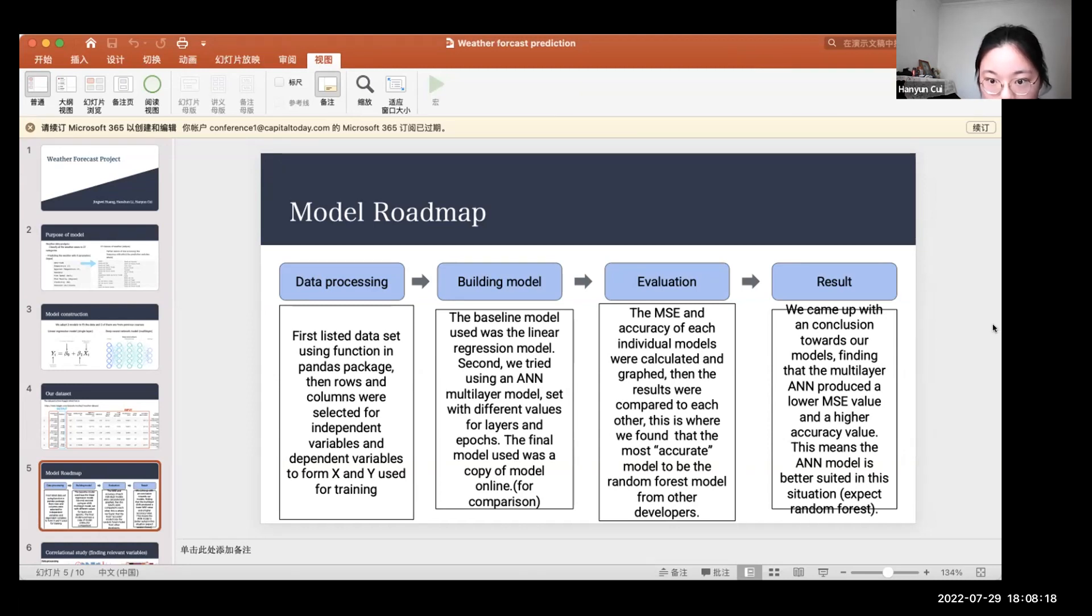At last, we came up with a conclusion towards our models, finding that the multilayer ANN produced lower mean square error value and a higher accuracy value. This means the ANN model is better suited in this situation, except random forest.